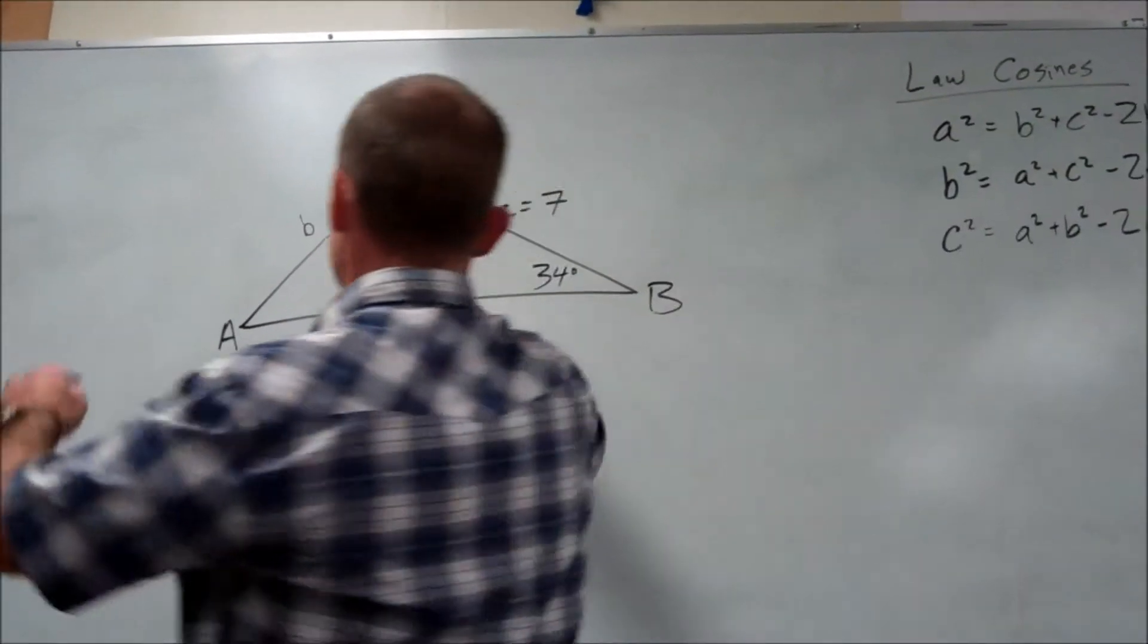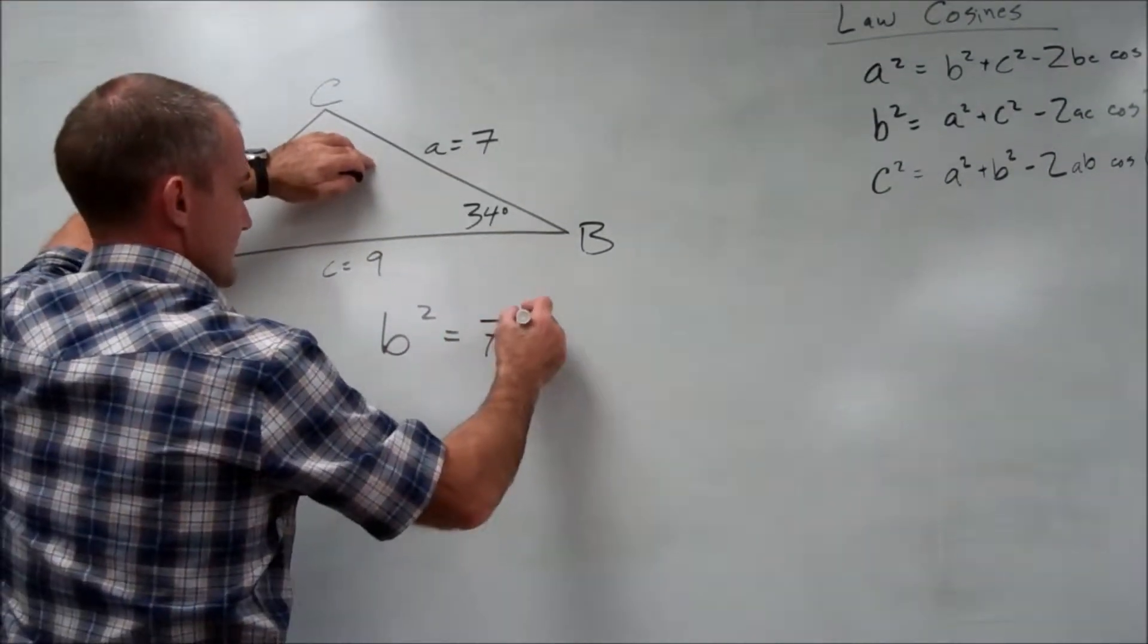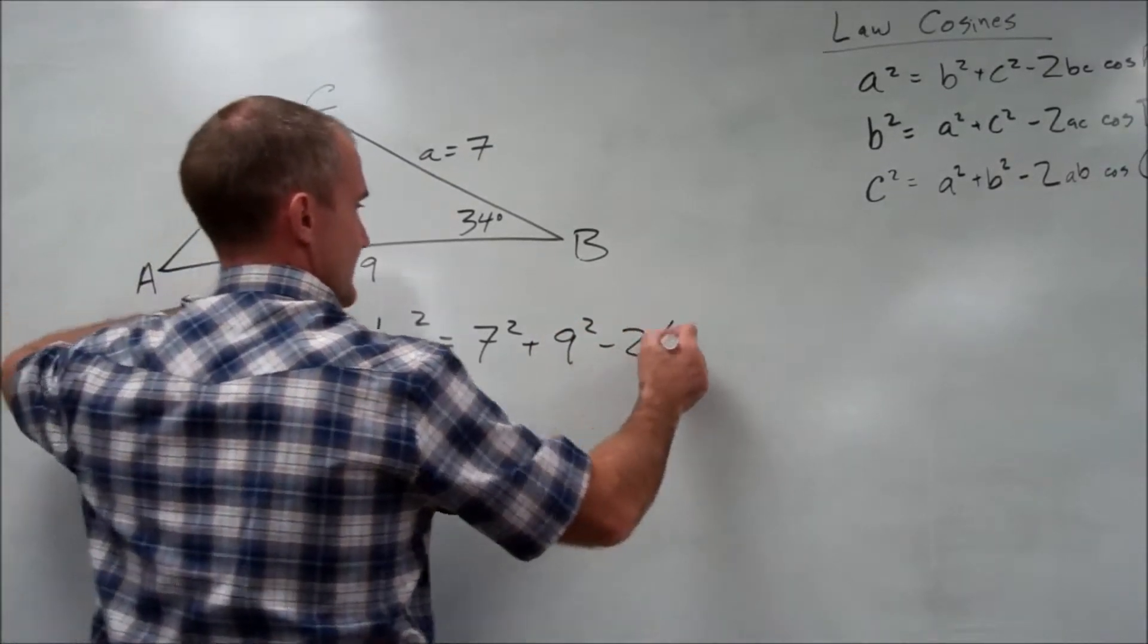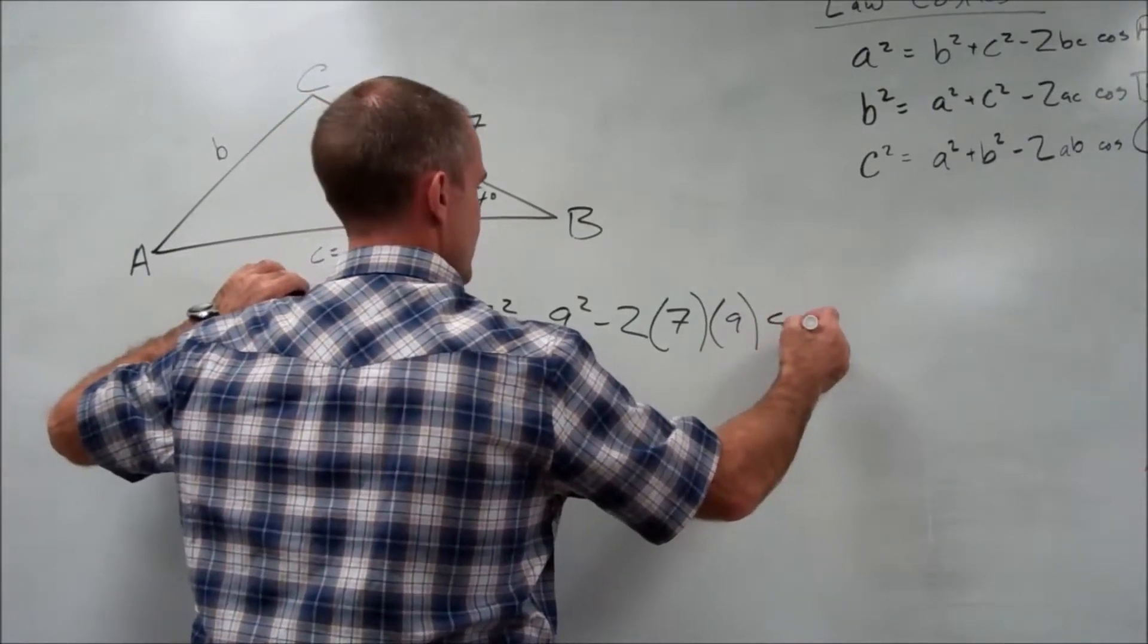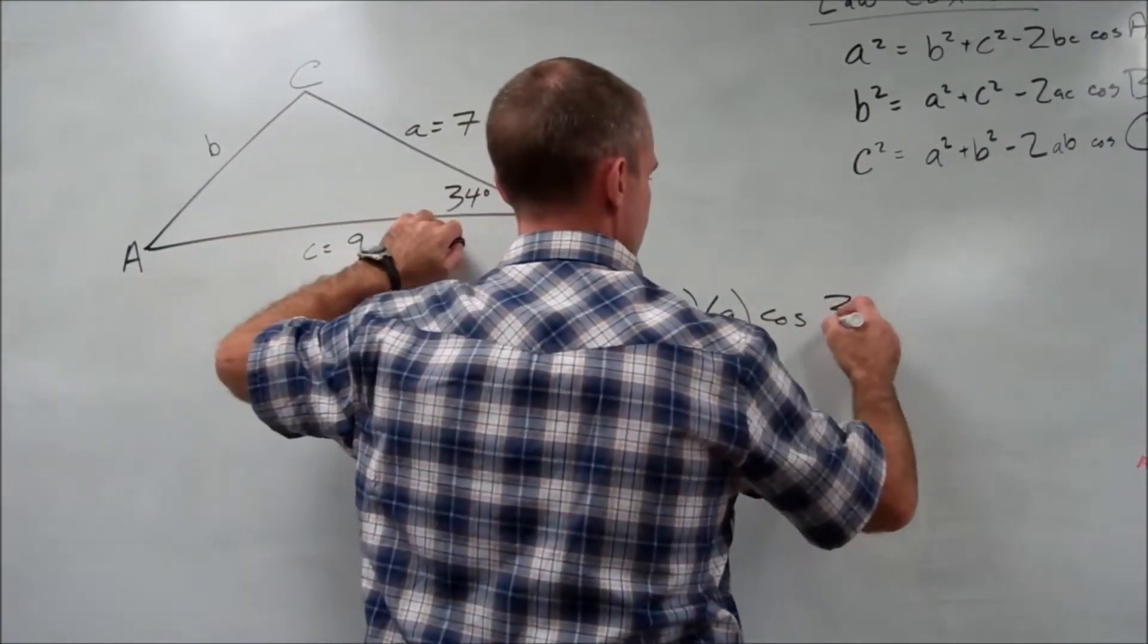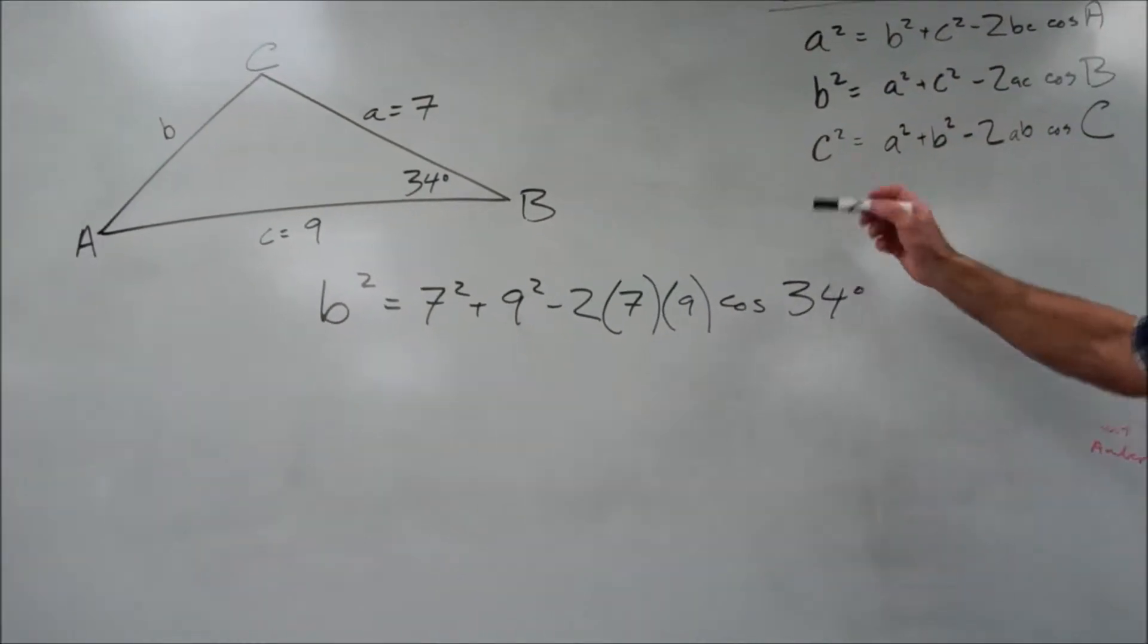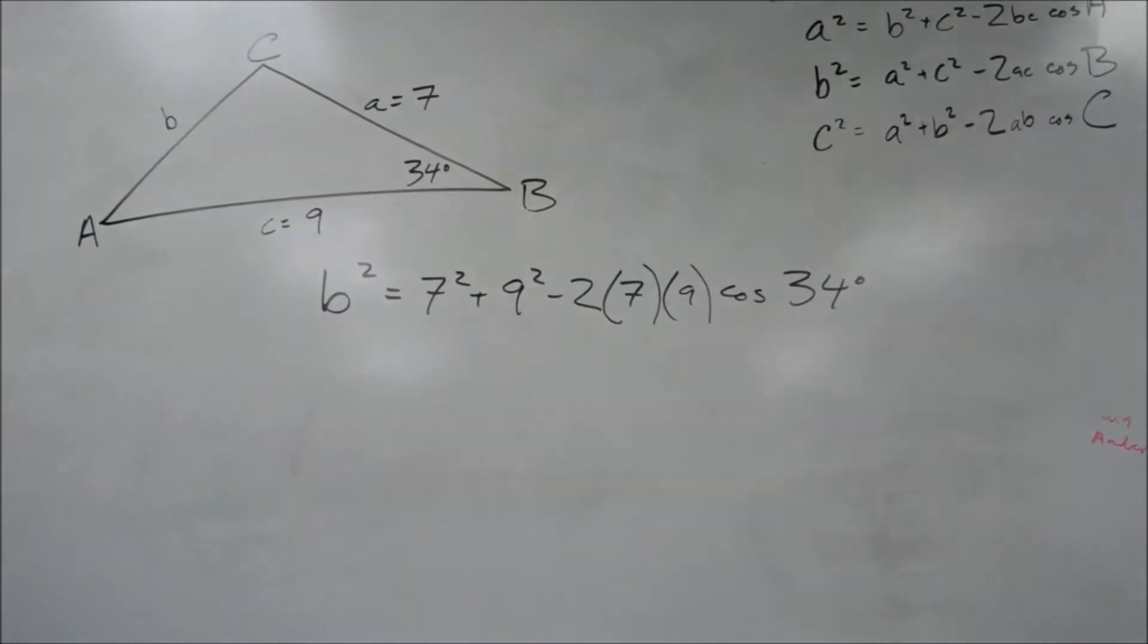So I'm using this equation right here. So I have B squared is equal to A squared plus C squared minus 2AC cosine of B, 34 degrees. Four variables in the equation. I have three of the four. I plug them in, in degree mode on my calculator.